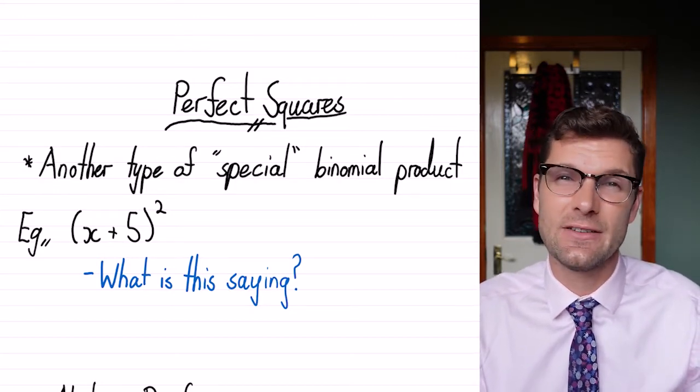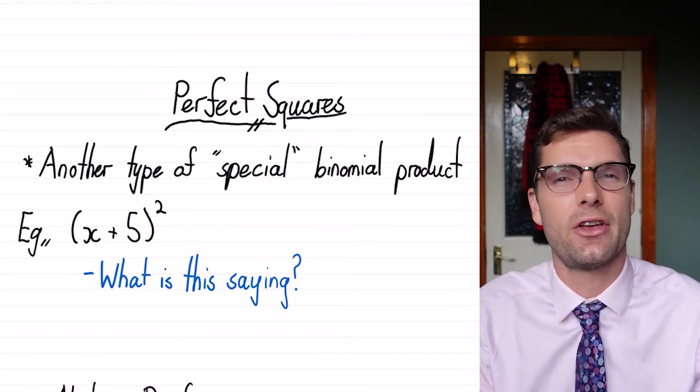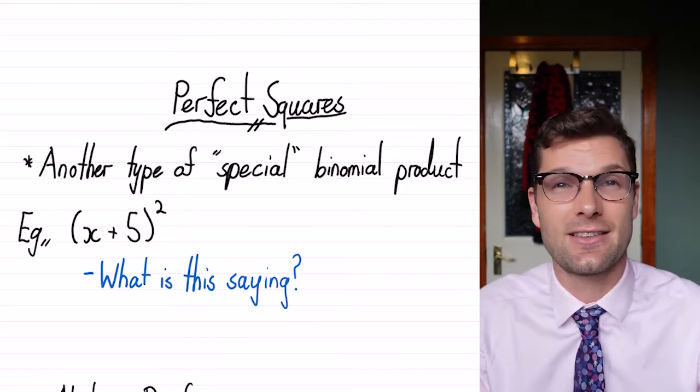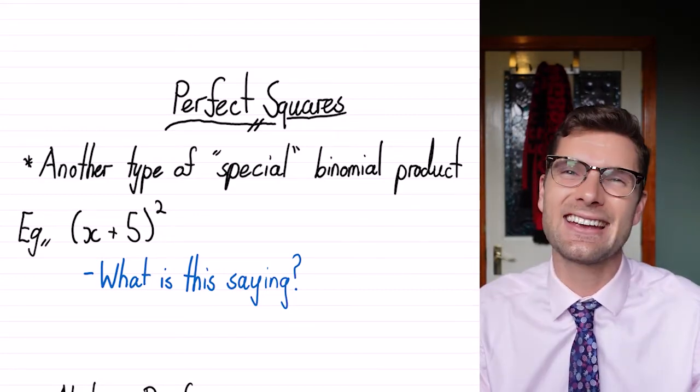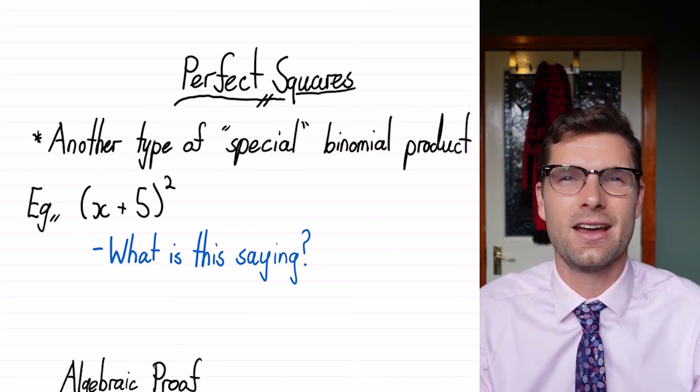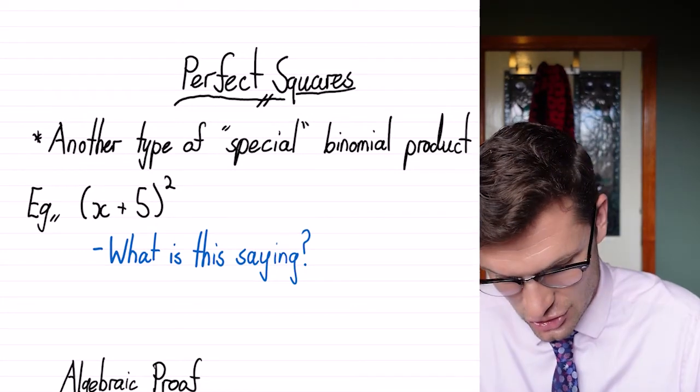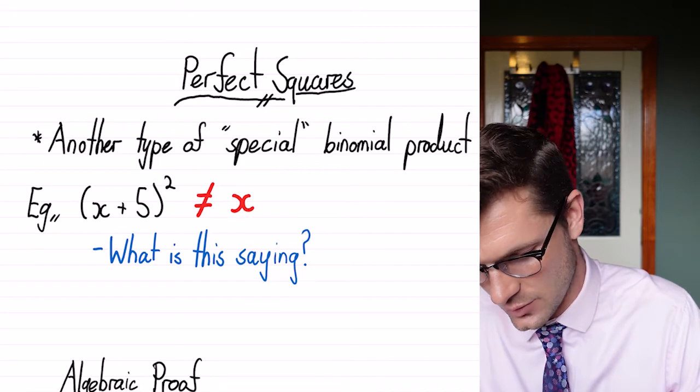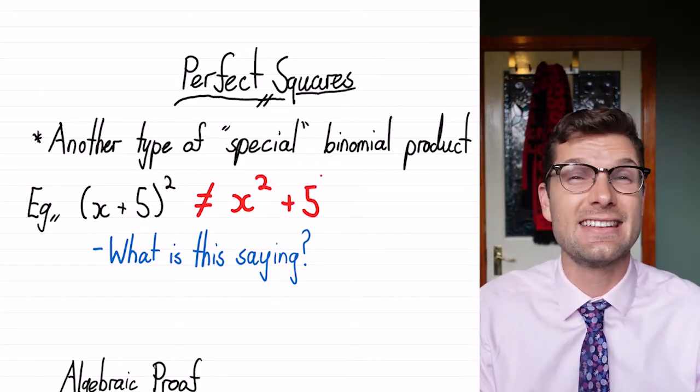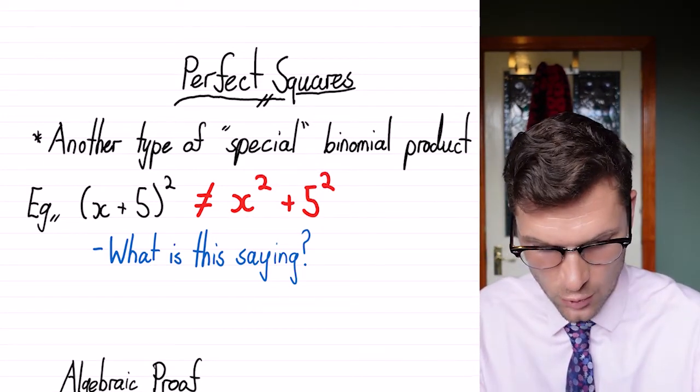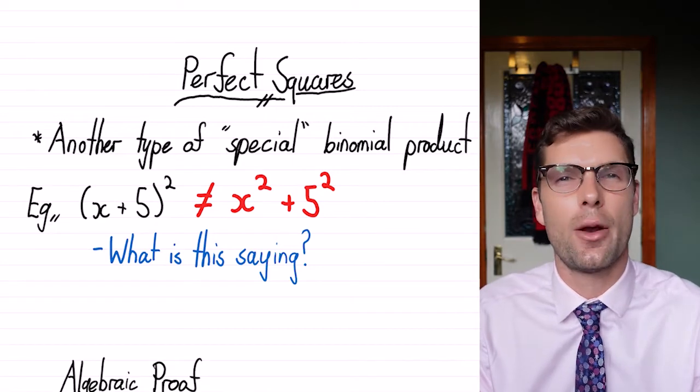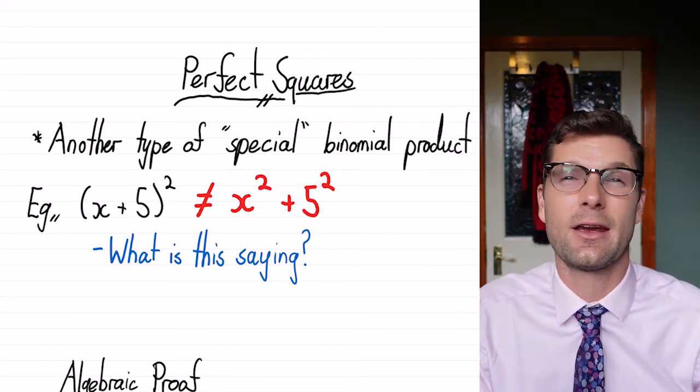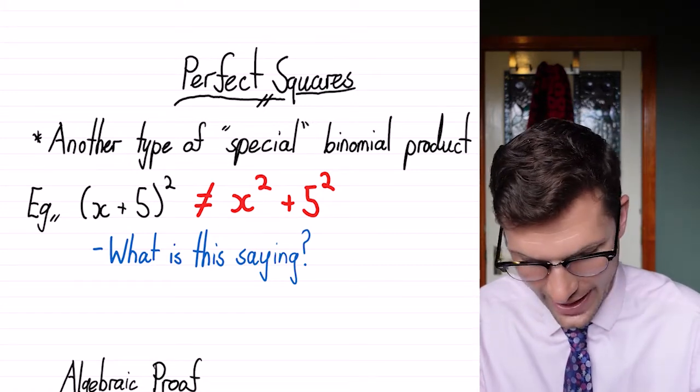If you haven't watched my difference of two squares video, that also goes into another type of these binomial expansions. So the biggest mistake that students make here is that we've got x plus 5 all squared. The number one mistake is that students put down that this is equal to x squared plus 5 squared. It's such an easy thing to do. You see that square index and you put it on both terms, assuming that that's correct. But we've got to really think about what is this equation actually saying.